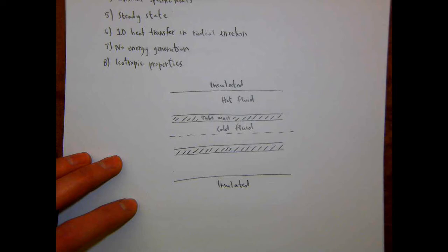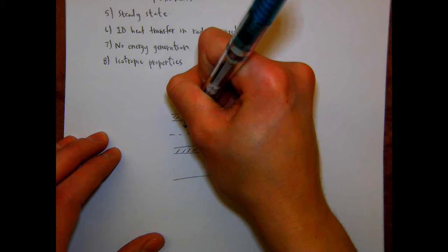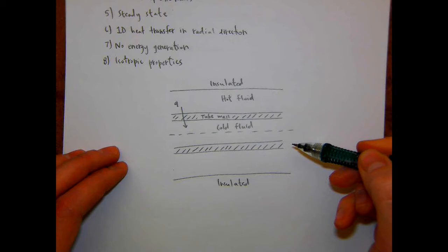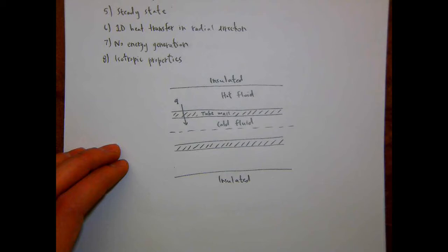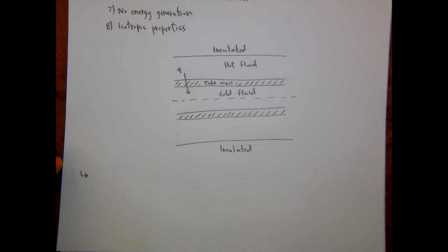We're setting up the derivation with the hot fluid on the outer part of the heat exchanger and the cold fluid on the inner part, so Q moves from the hot fluid to the cold fluid. A student asks whether there's any advantage to having the hot fluid in the outer cylinder versus the inner cylinder.